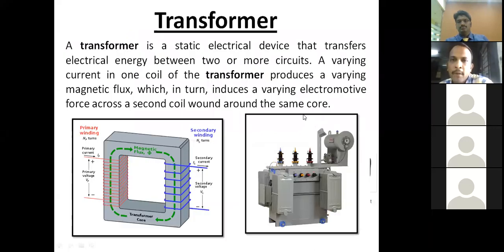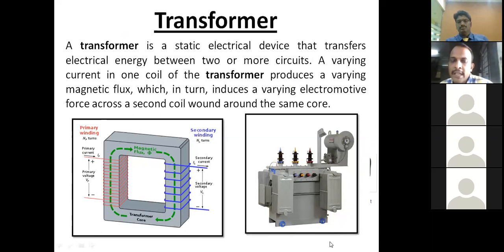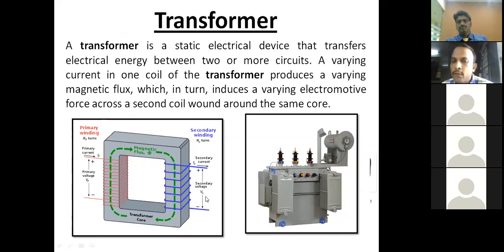The next equipment is the transformer. A transformer is a basic static device which converts electrical energy from one circuit to another. The two circuits are not electrically connected but are magnetically connected. It changes electrical energy without changing frequency — if input frequency is 50 Hz, output frequency will also be 50 Hz. The basic diagram shows a primary winding where we give the supply, and a secondary winding where we connect the load.